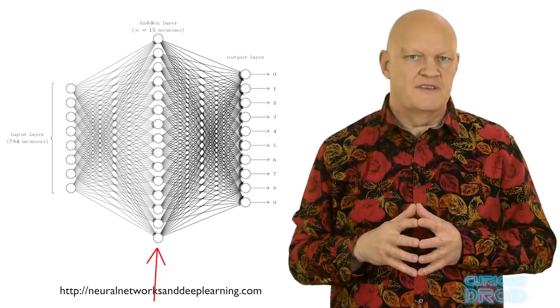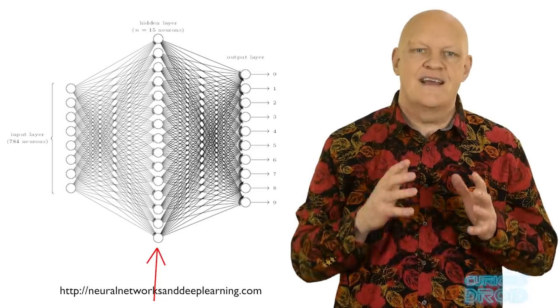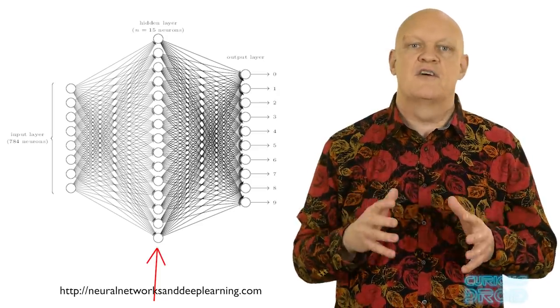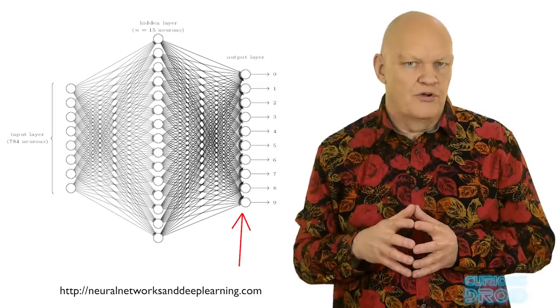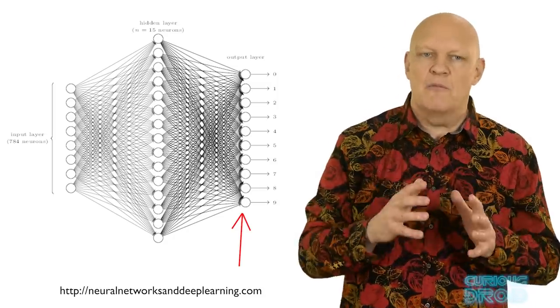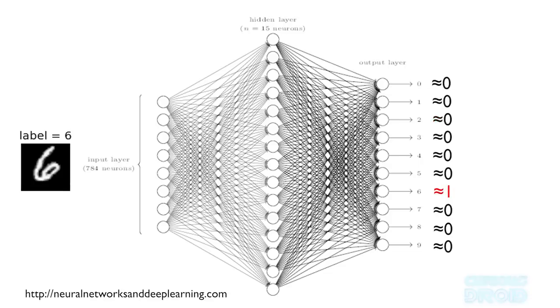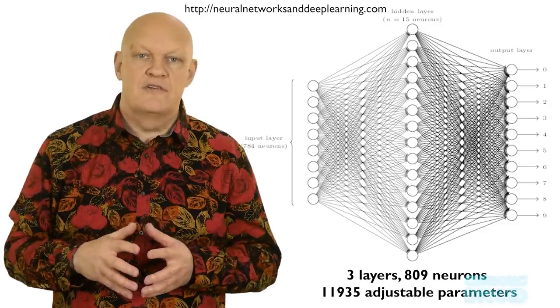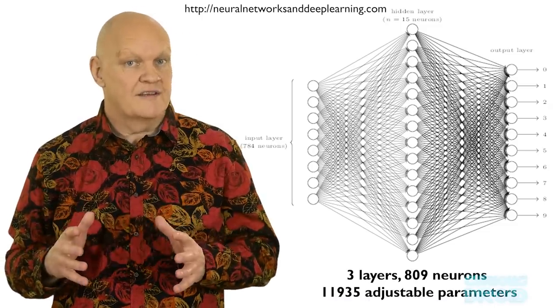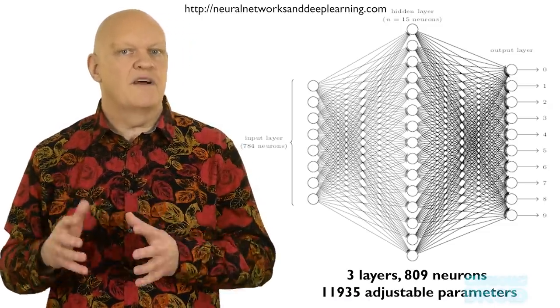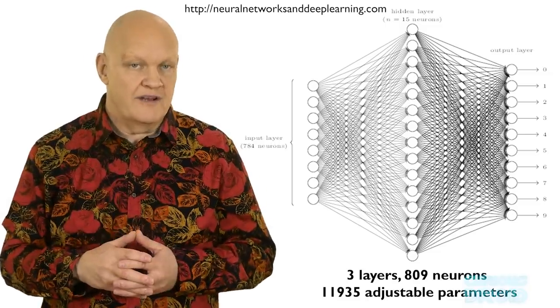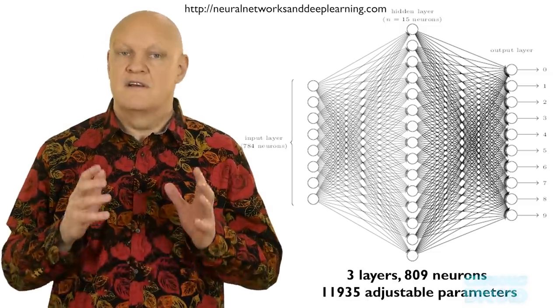The outputs of the 784 neurons feed a second hidden layer of 15 neurons which then in turn feeds 10 output neurons of the third layer which represent the output of the network. So when the model is shown a number 2 for example then output 2 should be close to 1 and the rest close to 0. If a 6 were shown then output 6 would be close to 1 and the rest close to 0. This model has 809 neurons in 3 layers, together with the weighting values of each input and bias values it has a total of 11,935 parameters that can be adjusted.